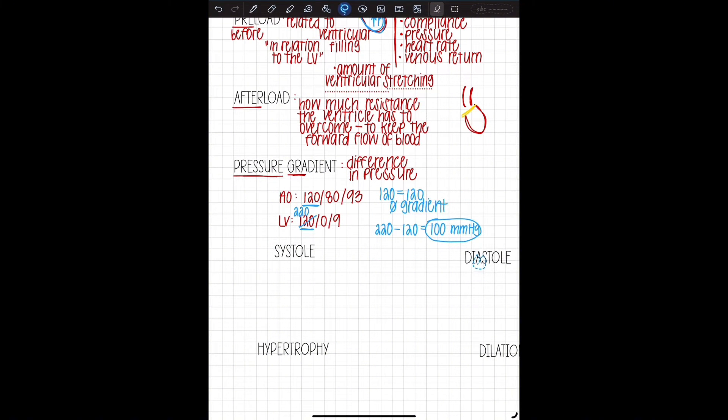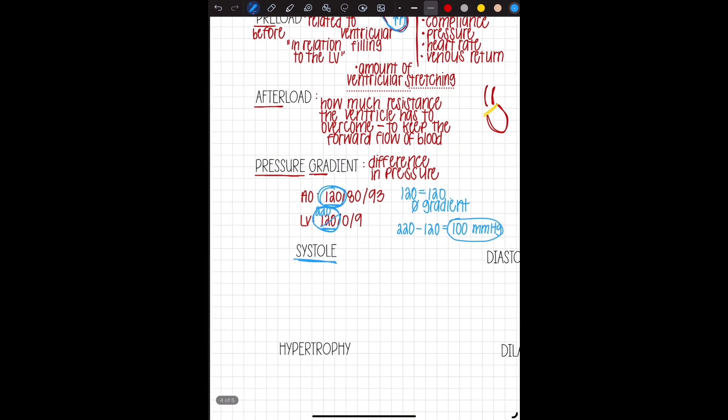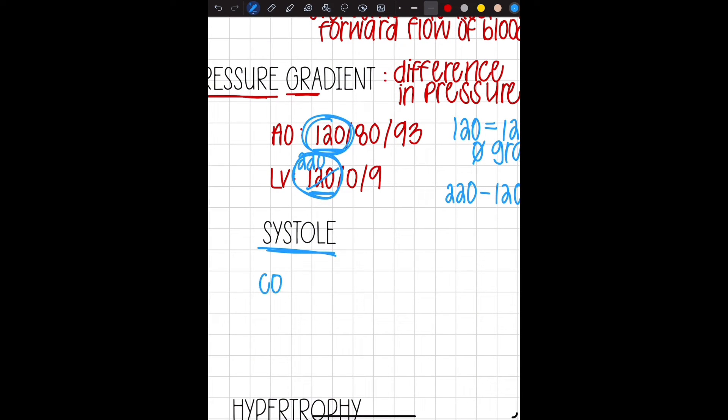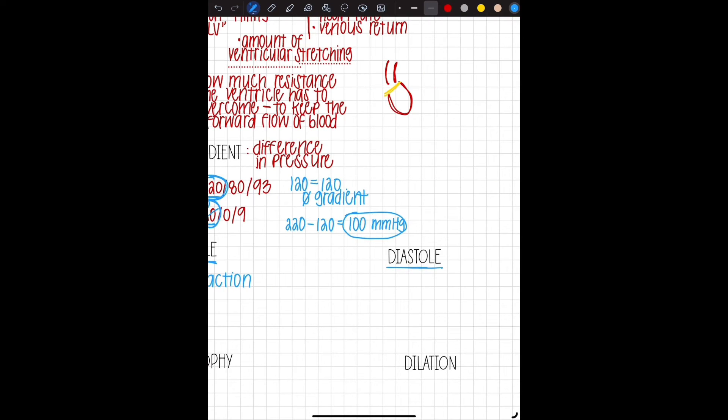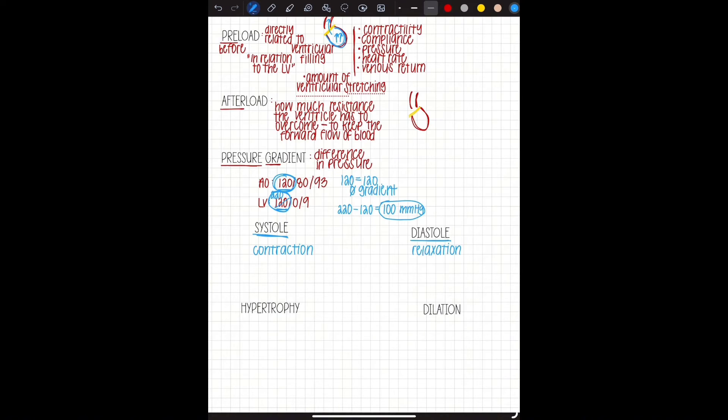So now we've used some of these terms when we looked at that example, but systole is what we talked about. These were systolic numbers. So what is systole? Well, systole is contraction. And remember, what are we talking about in relation to the ventricle. And then diastole is relaxation. So during diastole filling is occurring and during systole ejection of blood is occurring. And again, that's in relation to the ventricles.